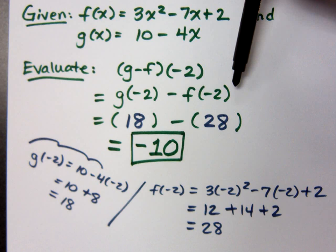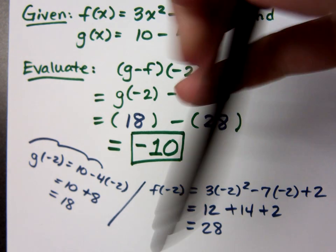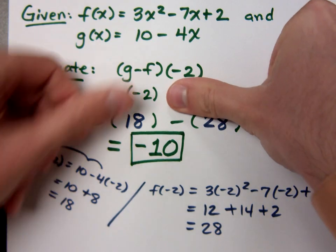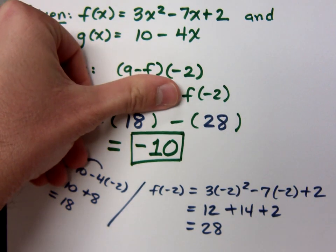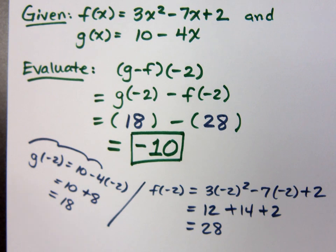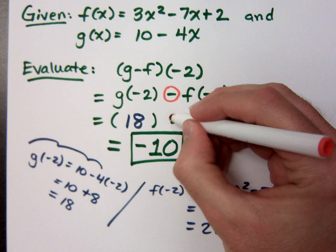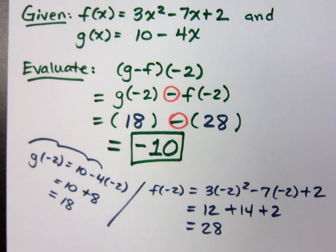So notice what we did here. With this guy, first rewrite that, and I just evaluate each of these. You can do g of negative 2. You can do f of negative 2. And then what you have left to do is to subtract them. The order here is very important. You don't just find each of these guys and then just subtract however you want to. You do g, and then you subtract f off of that. Do you all agree with that one? You did it right. Well done.